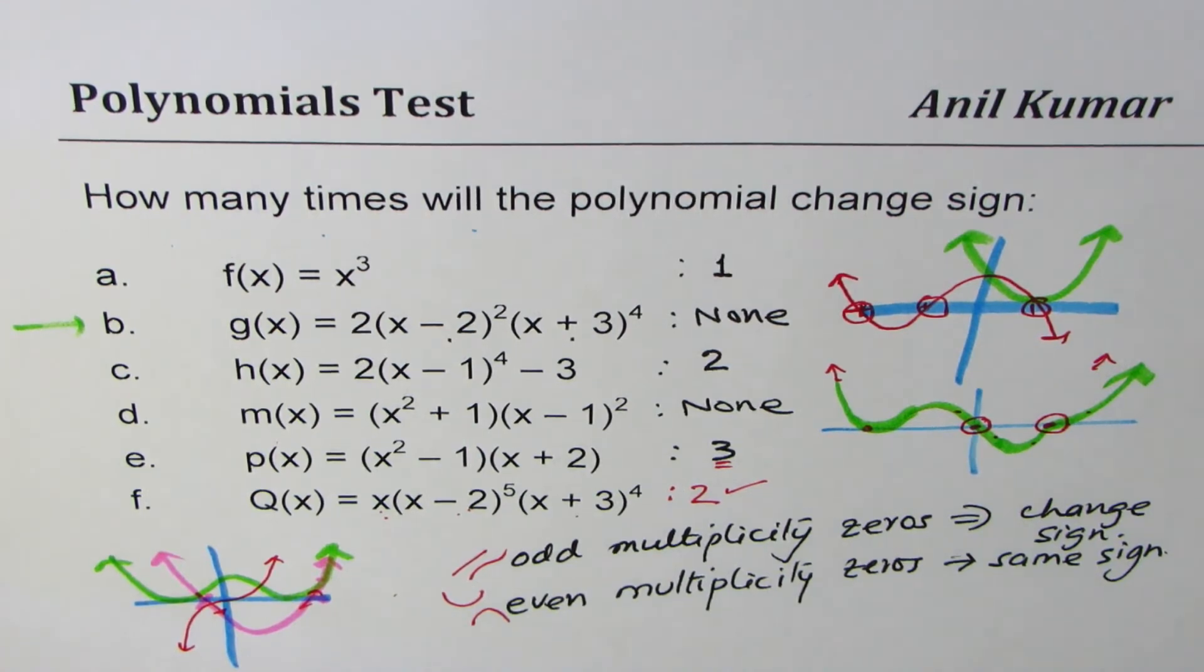So that is how by counting the order of multiplicity of the zeros, how many odd zeros you have, we can figure out how many times a polynomial will change sign. I hope you find it very interesting. Thanks for watching and all the best.